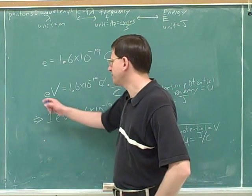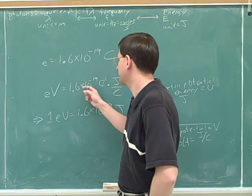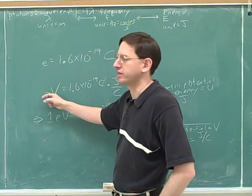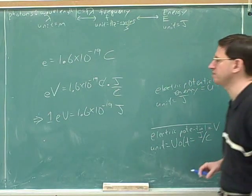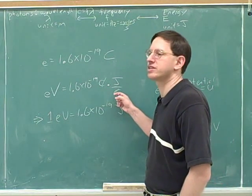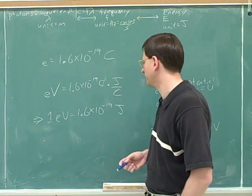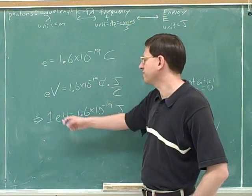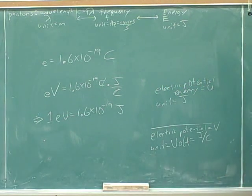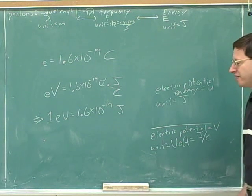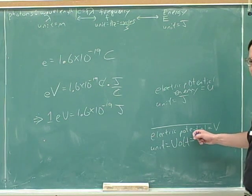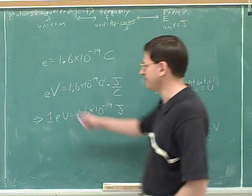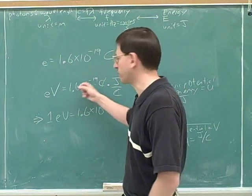All right. So we could erase the e and replace it with 1.6 times 10 to the negative 19 coulombs. That's what little e means. And we can replace the V and replace it with joules per coulomb. That's what V means. And then if we do unit analysis, the coulombs cancel. And this is exactly what you were saying. So is an electron volt a unit of energy or a unit of potential? Energy. Yeah. But this really confuses people because they've just got finished congratulating themselves on figuring out that V is a unit for potential. And then it really throws them for a loop that eV is a unit for energy. All right. But you can see how that works out with the units here.